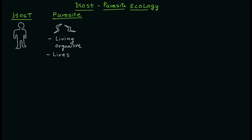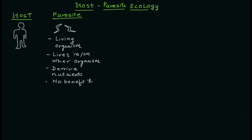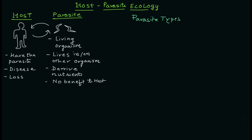A parasite is a living organism that lives in or on another living organism, such as humans. It derives nutrients from that host because it needs nutrients for its life. There is no benefit to the host — in fact, the host will develop disease due to the loss of nutrients. This is a one-way relationship where the parasite benefits and the host suffers loss.